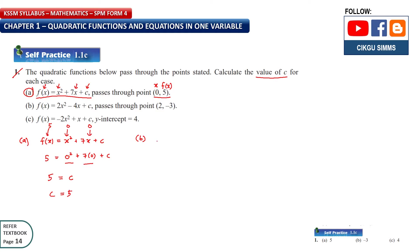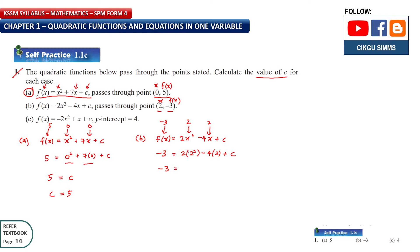For question b, f(x) = 2x² - 4x + c. The coordinate given is x = 2 and f(x) = -3. Substituting: -3 = 2(2²) - 4(2) + c, which gives -3 = 8 - 8 + c, so 0 + c = -3. Therefore c = -3.